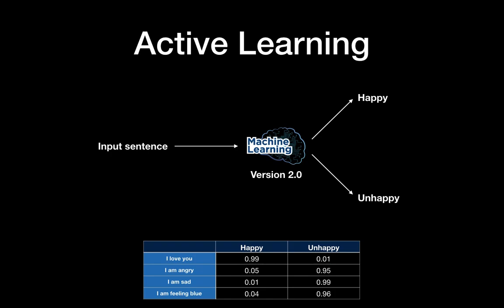So let's see. The version 2 model can now predict 'I am sad' as unhappy with higher confidence. And 'I am feeling blue' is now going to unhappy, which is correct, also with very high confidence. This is active learning with entropy. I hope you enjoyed learning about entropy and how we use entropy in machine learning, and I will see you in the next video. Thank you.